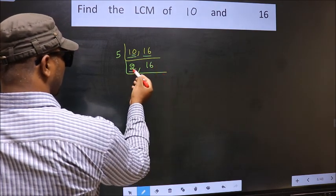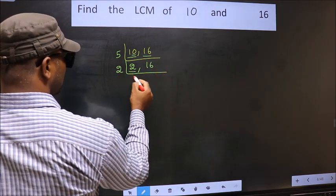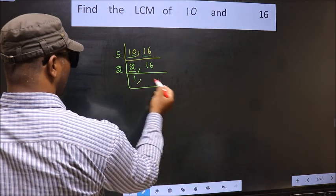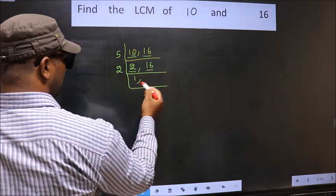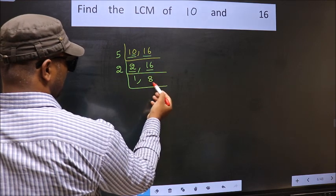Now, here we have 2. 2 is a prime number, so 2 times 1 is 2. The other number 16 — when do we get 16 in the 2 table? 2 times 8 is 16.